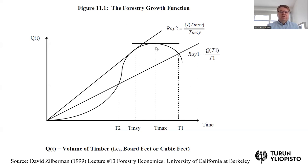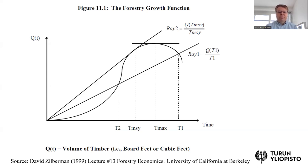T_max is the point where the growth rate becomes totally flat and represents the maximum timber that can be produced. After that point, if you wait too long, the volume of timber actually starts to decrease. This illustrates that it is not very useful to wait too long before harvesting.